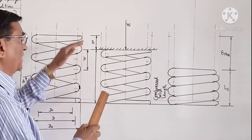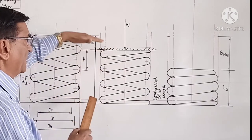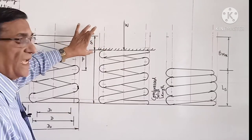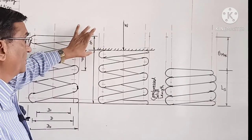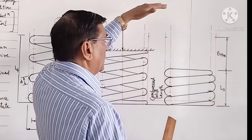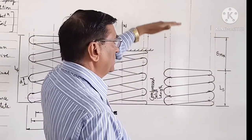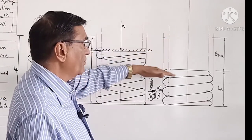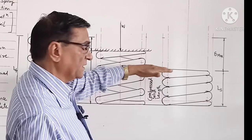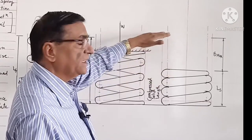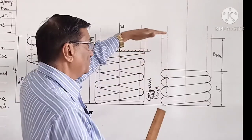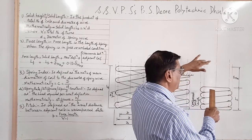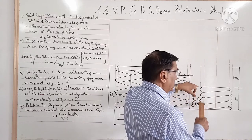Now when the spring is loaded, it gets compressed. This is the compressed length and this is known as deflection. After application of load, if we increase the load, the spring gets further compressed — the compressed length decreases and deflection increases. This is the maximum deflection and this is the solid length.